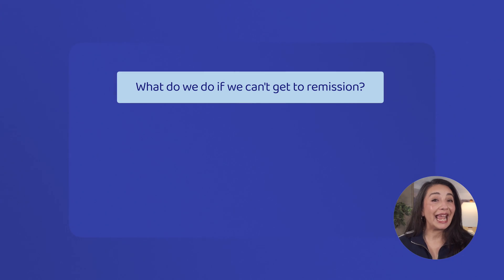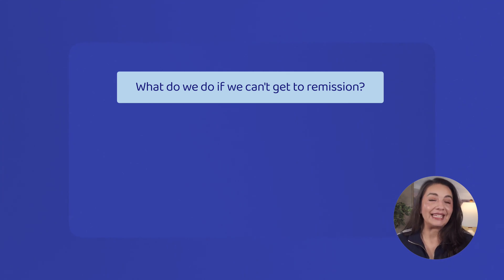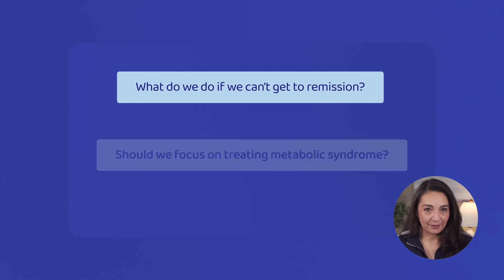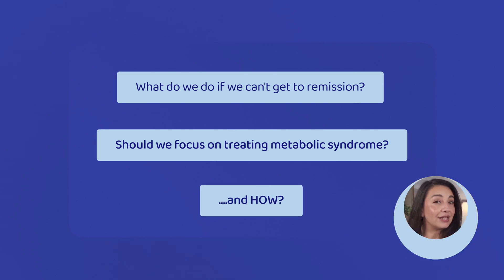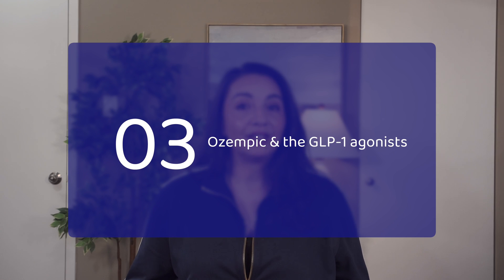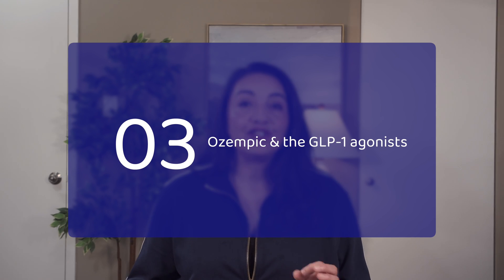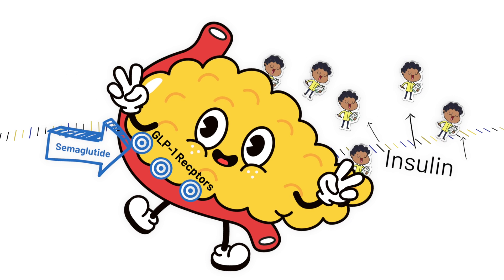But what do we do if we can't get to remission? And now that we understand how metabolic syndrome may be the second driver of inflammation in some folks, should we also focus our attention on that? That's where Ozempic and similar medications come in. Semaglutide, the generic name for Ozempic, is a GLP-1 agonist, meaning it attaches to and activates the GLP-1 receptor found in certain cells in our pancreas. This drug mimics a naturally occurring GLP-1 that we make in our gut in response to food, which then stimulates our pancreas to secrete insulin.